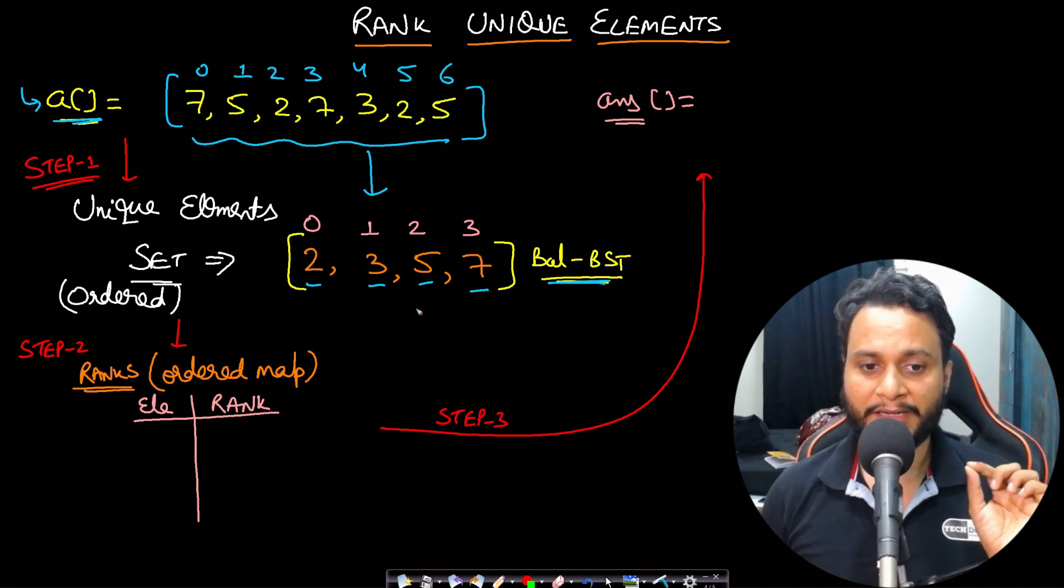Using a set, we cannot directly see five and say what is the rank of five. For that to happen, we need to know how many elements are to the left of five in order of one time and that is not possible with the set.